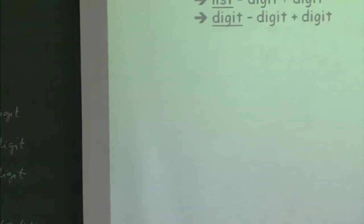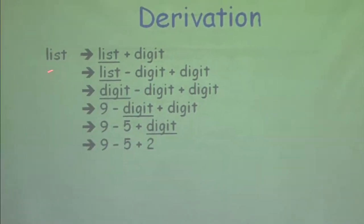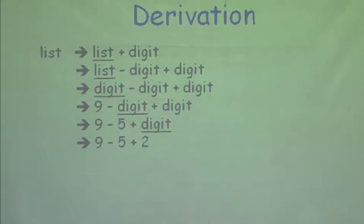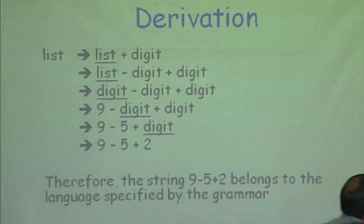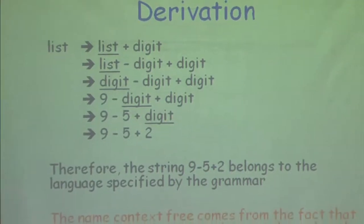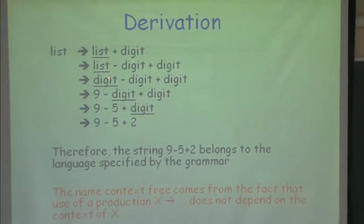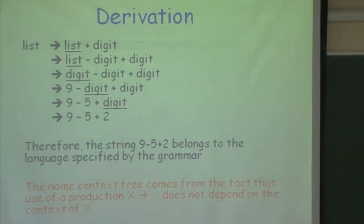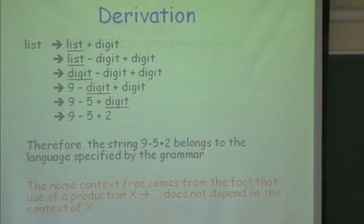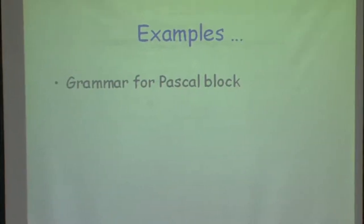Here is another example. I am now trying to show that the string 9 minus 5 plus 2 belongs to the language specified by the grammar, and these are the sequences I follow in the production. Therefore we say this belongs to the language specified by this grammar. The term we use — context-free grammar, perhaps you already know it from your theory of computation — comes from the fact that when I look at the expansion of any non-terminal, I did not look at what was on the left and what was on the right of it. I just looked at this symbol in isolation.